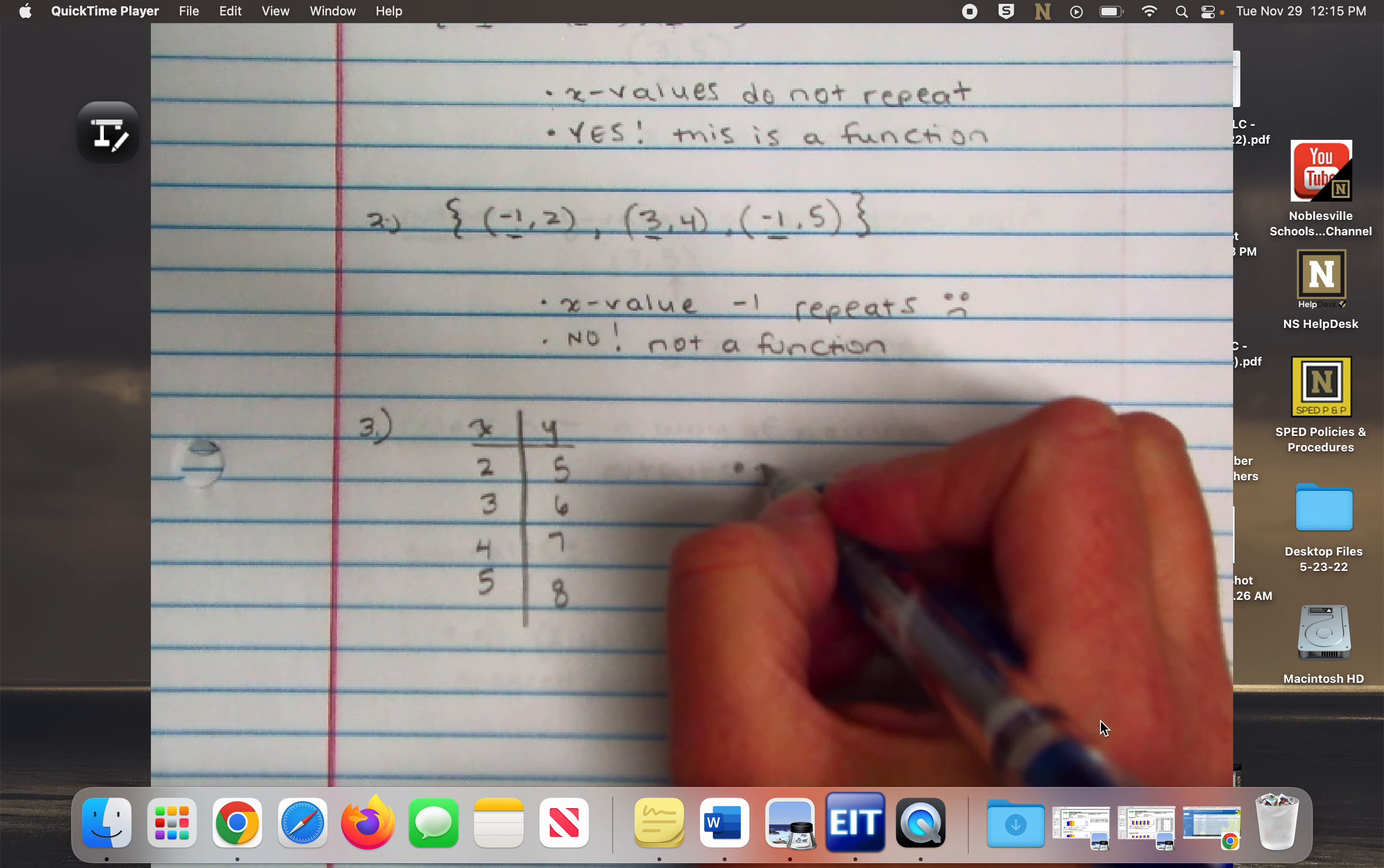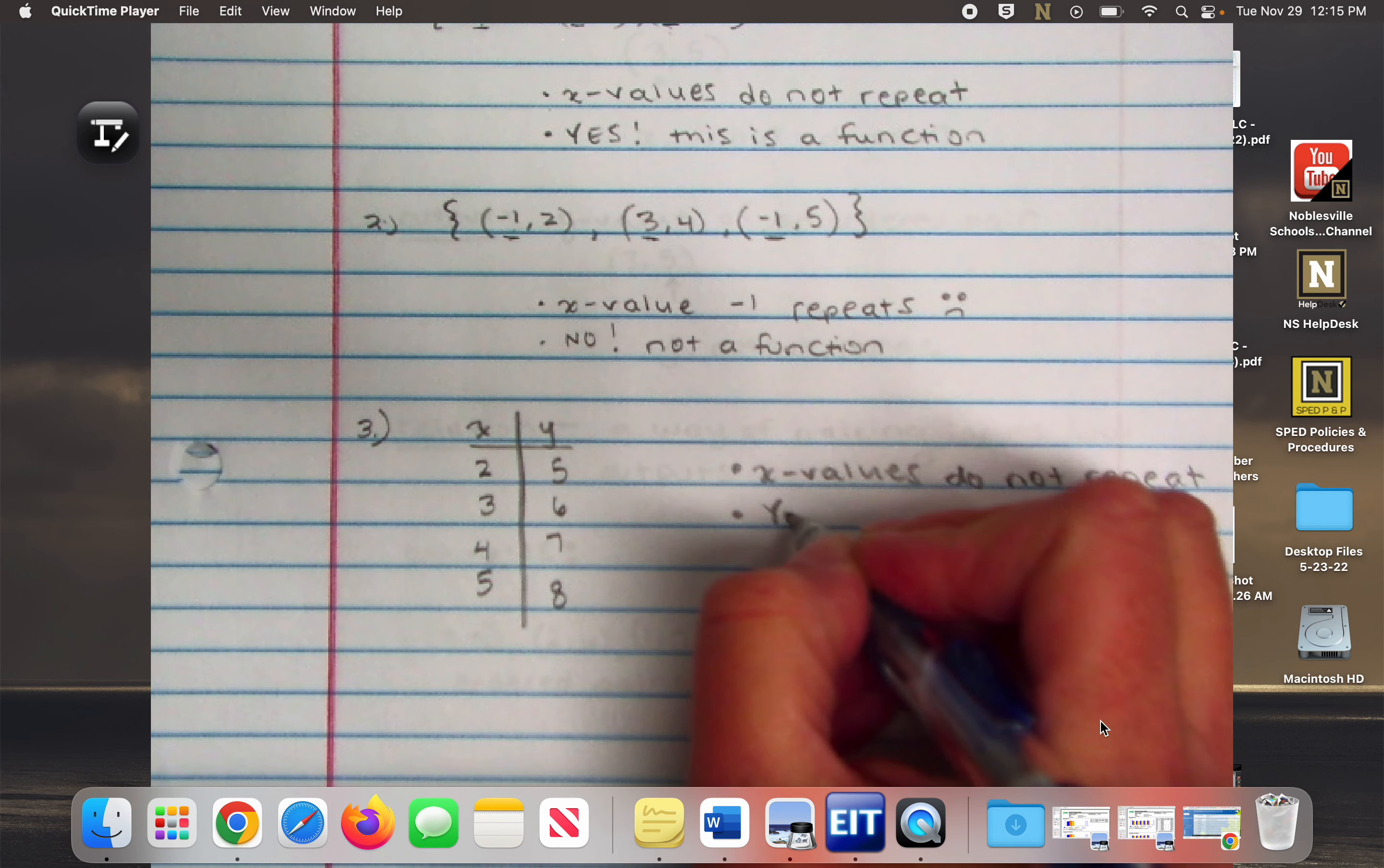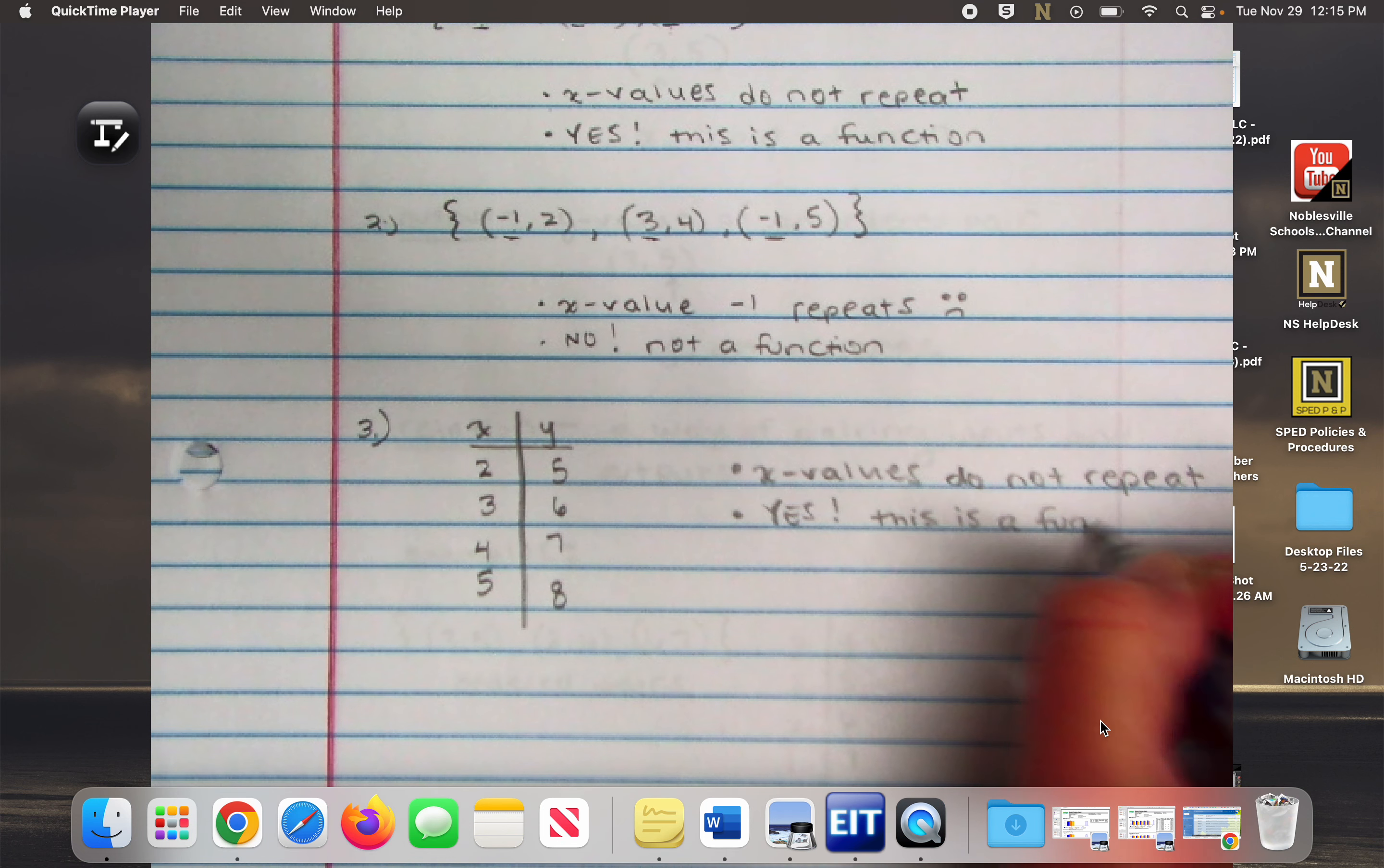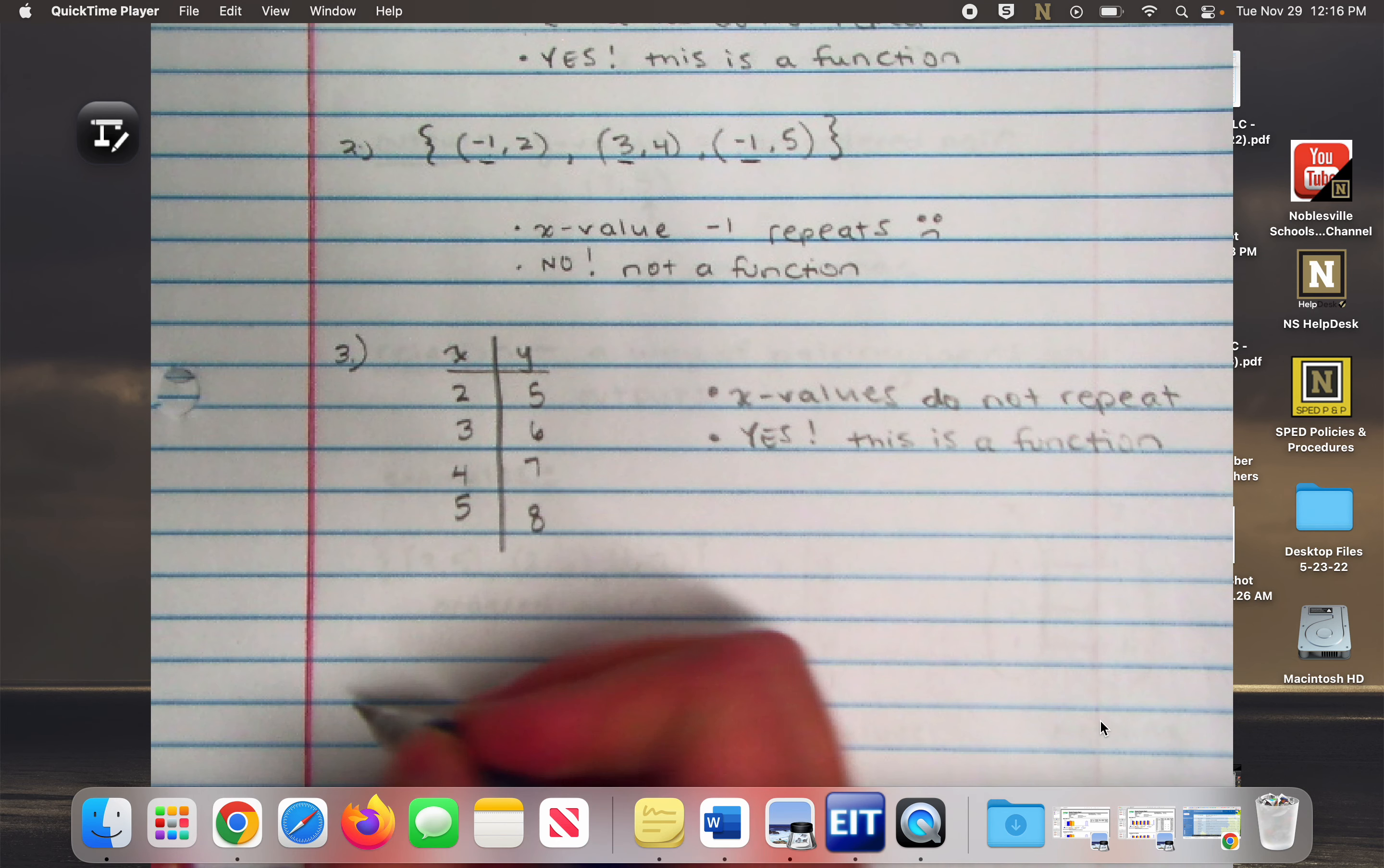So this is a function. So we talked about ordered pairs yesterday. We talked about tables. What was the third way you can show a relation? If you look back to that first page. Yeah. What were those little circle things called? The mapping. So mapping. So let's look at a mapping example.